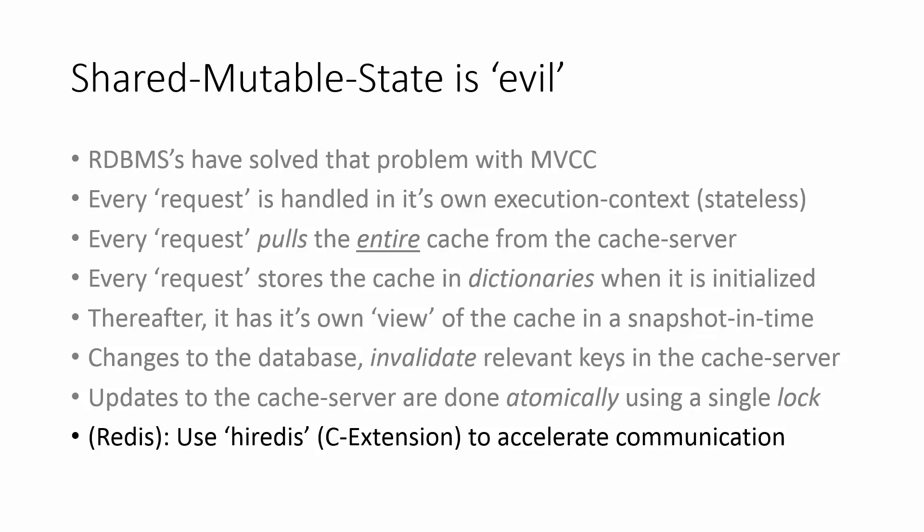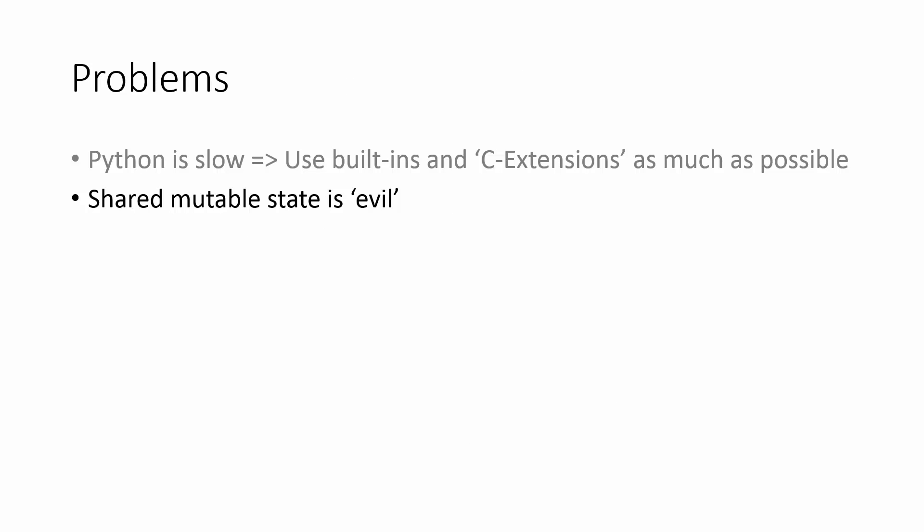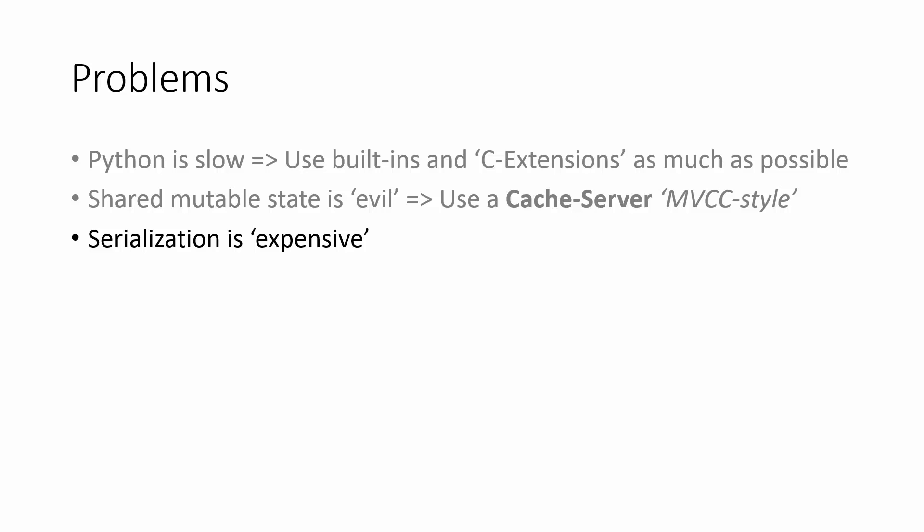If we're pulling all of the cache on each request, it has to be really fast for the request to be responsive. So you shouldn't store too much in the cache server — that's generally recommended anyway — but the pulls need to be really, really fast. Shared mutable state is manageable if you're using the cache server in an MVCC style, where each request has its own view. It just needs to be fast.